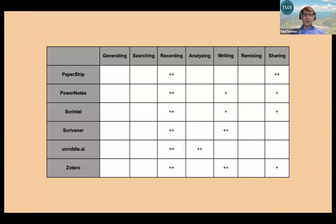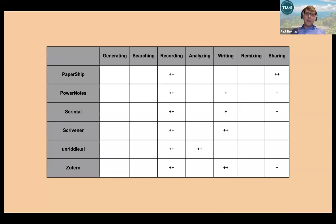Here are some programs for recording information. You'll see Zotero, which is not a generative AI program, alongside things like Scrivener, PowerNotes, and Unriddle.ai that do in certain instances use generative technology. Often when it comes to recording information, they can be paired with the writing phase — something like Zotero can generate citations you've already recorded.